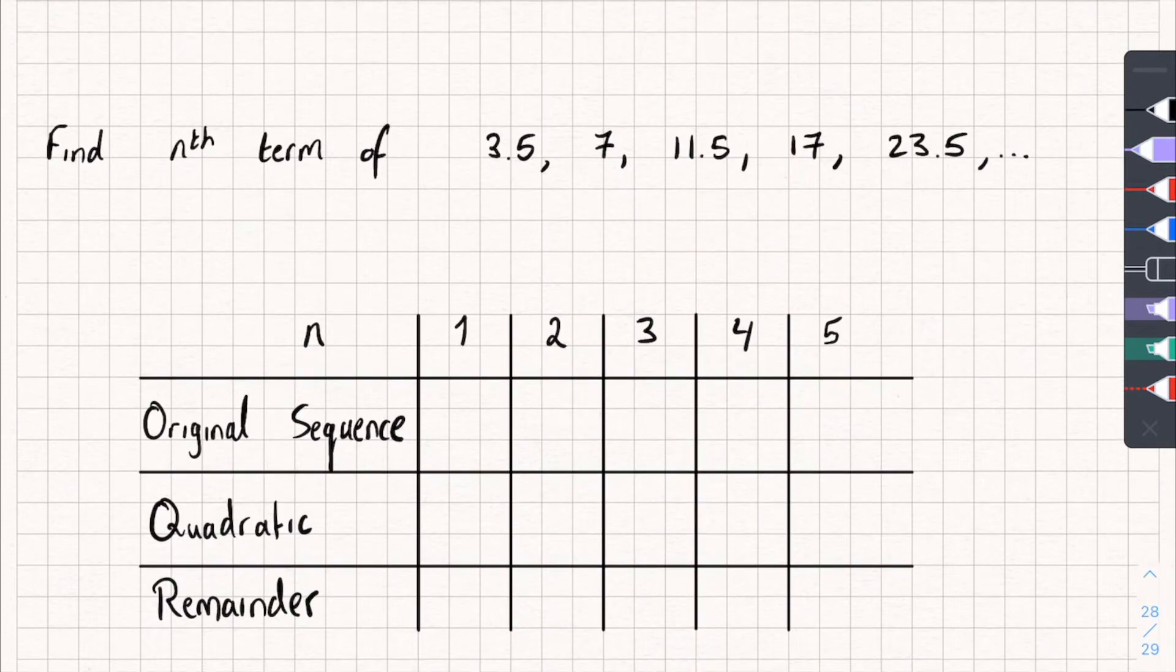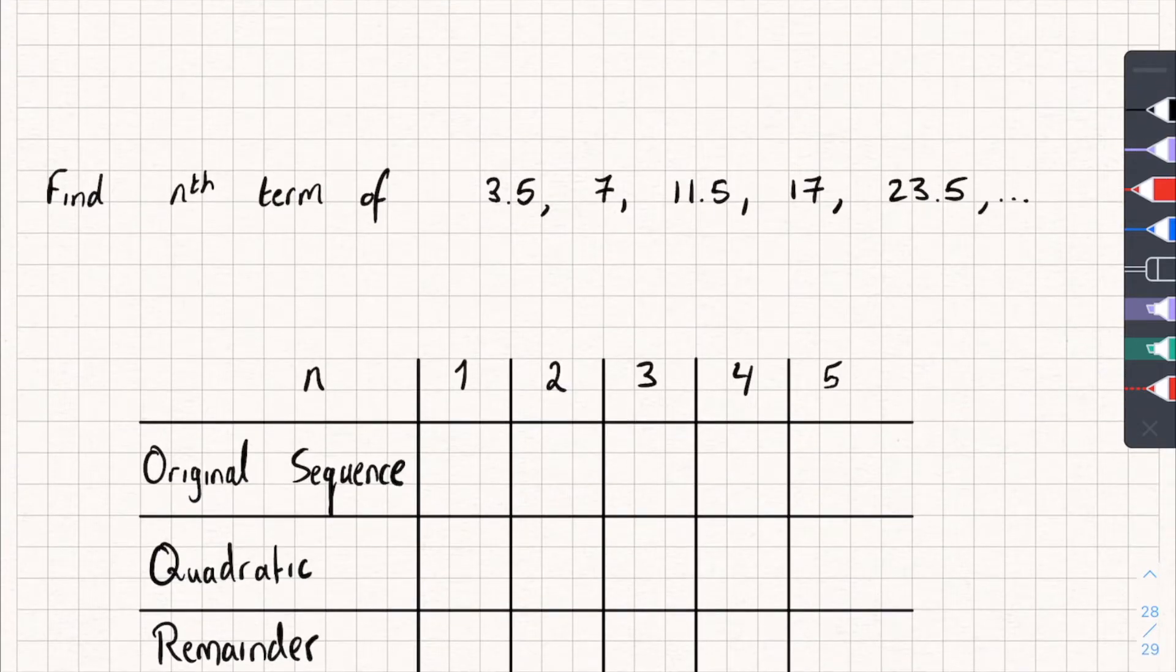I'll do one more example that's slightly different, because we've got decimals. So, this one, I'll talk us through it just the same. So, 3.5 to 7, plus 3.5. 7 to 11.5, we're going to add 4.5. 11.5 to 17, we're going to add on 5.5. You can probably notice the pattern already. And the last one, we're going to add on 6.5.